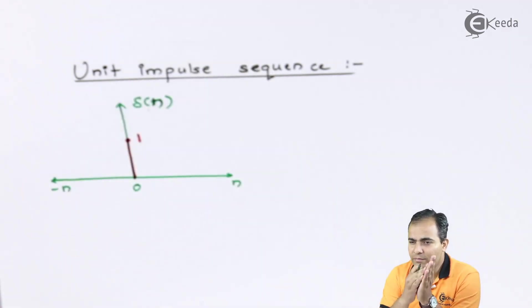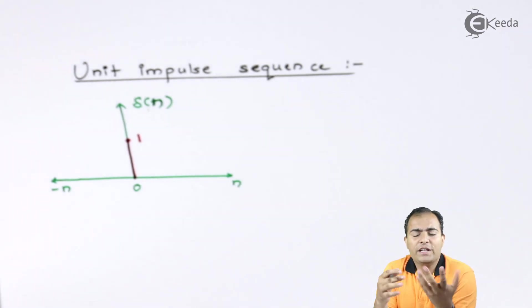Now the topic is unit impulse sequence. In plot there is a number of sequences or number of bits present in this graph. How to obtain that number of sequences or number of amplitudes in this graph we'll study. We are going to study the topic in the next videos, that is time shifting property.